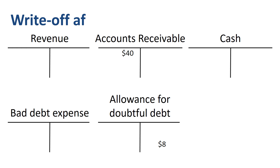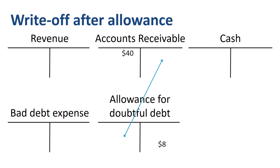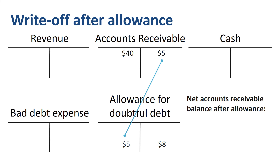Now that an allowance for doubtful accounts is in place, an actual write-off will not be as painful, at least not from the income statement perspective. Let's assume another customer goes bankrupt and there is zero hope of recovering any of the outstanding balance. It is therefore time to remove the asset from the balance sheet by crediting the accounts receivable account for the $5 that this bankrupt customer will never pay. But this time, the debit goes to the allowance for doubtful debt balance sheet account, not the bad debt expense in the income statement. Before the write-off, the net accounts receivable balance after allowance was $32, and after the write-off, the net accounts receivable balance after allowance is still $32.